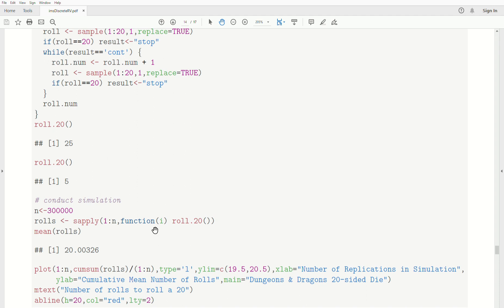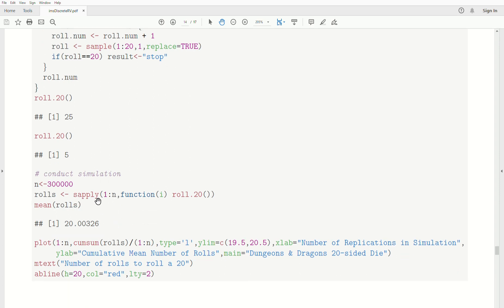Now let's conduct a simulation. Let's do a simulation of 300,000 simulations of rolling until you get a 20. So let's use sapply from 1 to n. n is 300,000. And we're just going to call this function roll 20, 300,000 times. We're going to store it in this vector rolls.